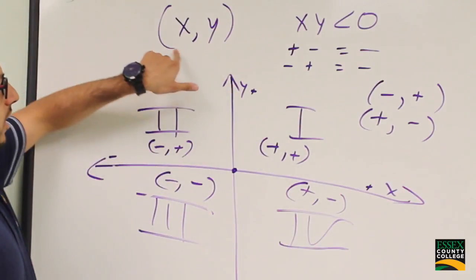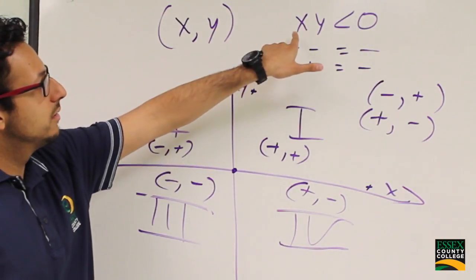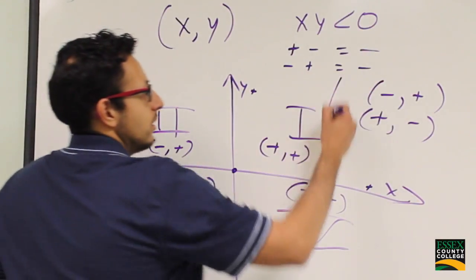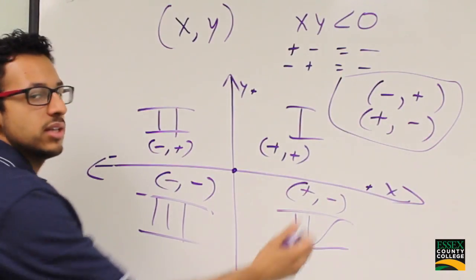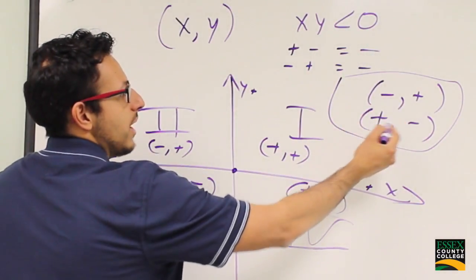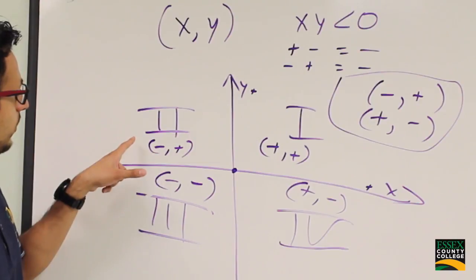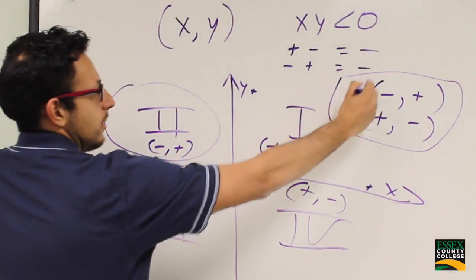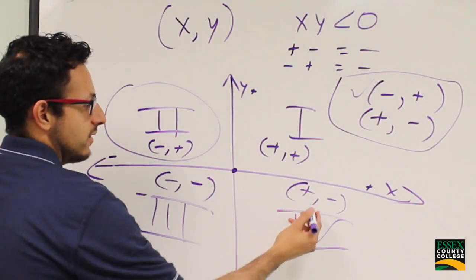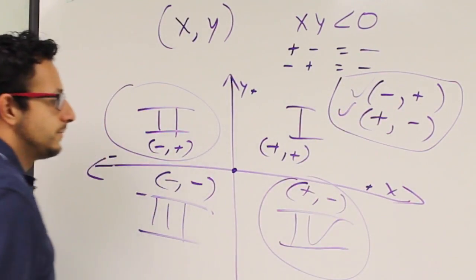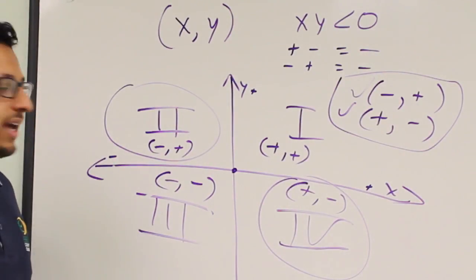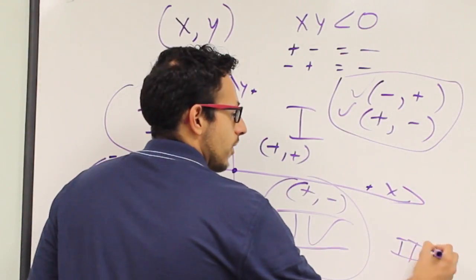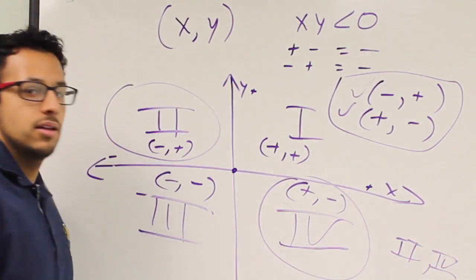So we need to find where x and y have opposite signs — negative and positive, or positive and negative. Looking at our quadrants, quadrant 2 has x negative and y positive, and quadrant 4 has x positive and y negative. Therefore, our answer is quadrants 2 and 4, which is answer choice C.